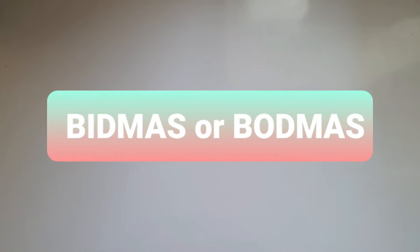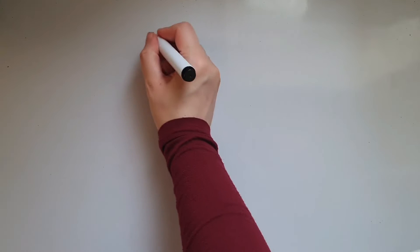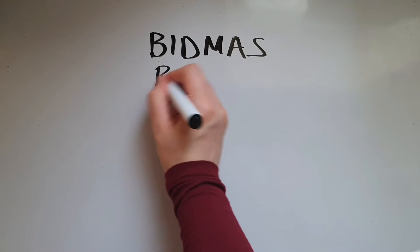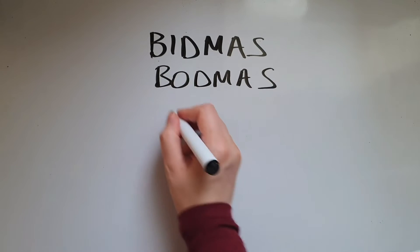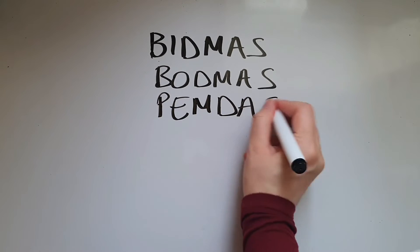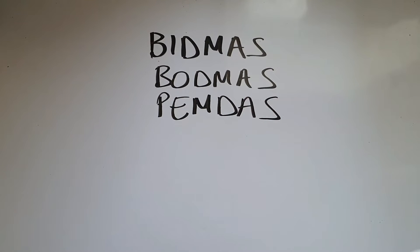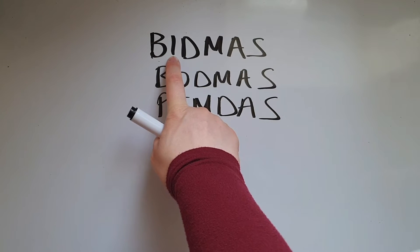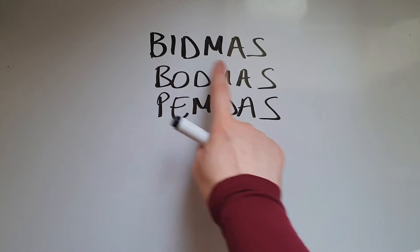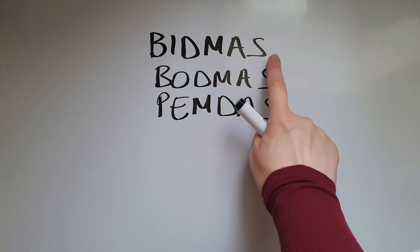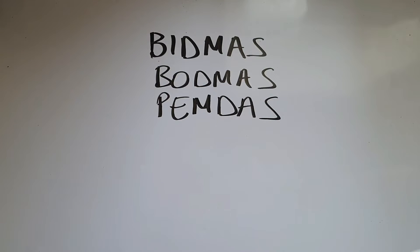In this video we'll learn about the order of operations in maths. You've probably heard BIDMAS, BODMAS, or PEMDAS — it all means the same thing. B stands for brackets, I is for indices or powers, D is for division, M for multiplication, A is for addition, and S is for subtraction.